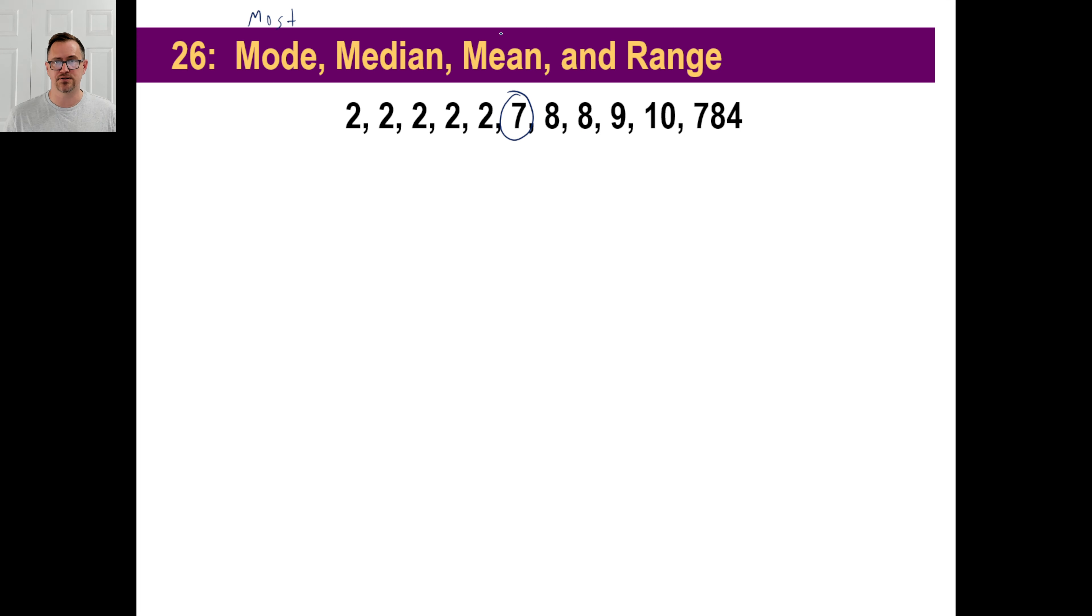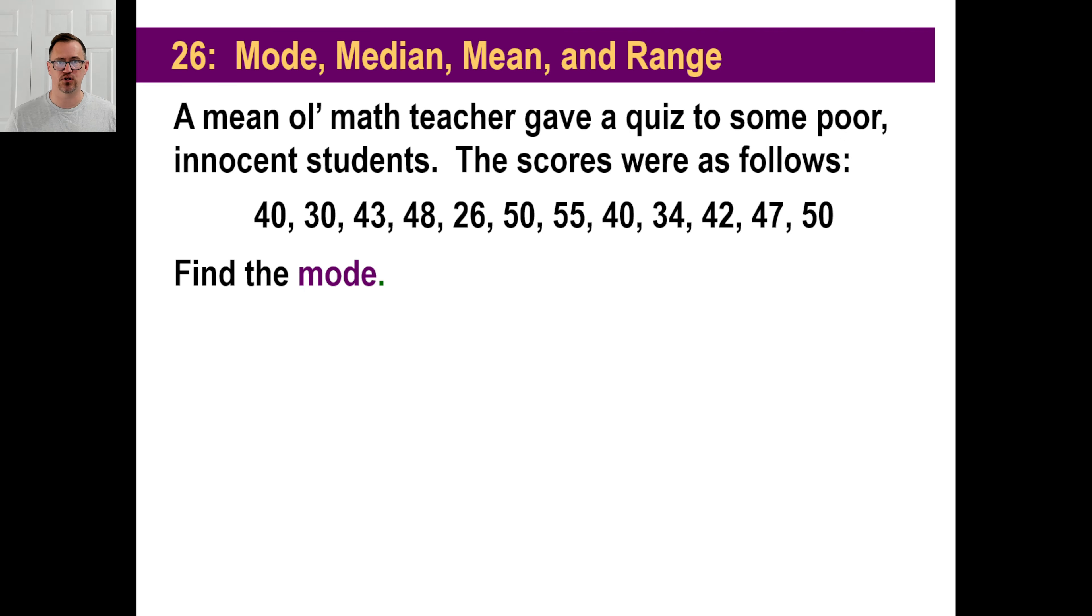The mean is another word for average. Make sure as an educated young adult, you need to make sure that you know another word for average is mean. The range is basically you take the smallest value and subtract it from the largest value. So the range will be 782. Those are the terms you need to know.